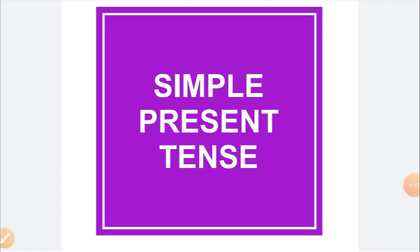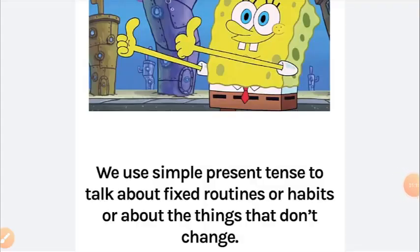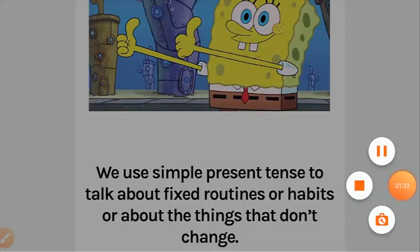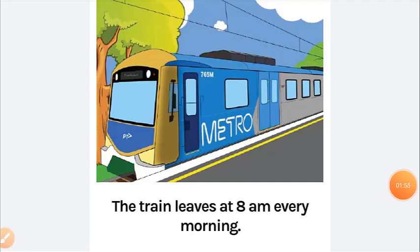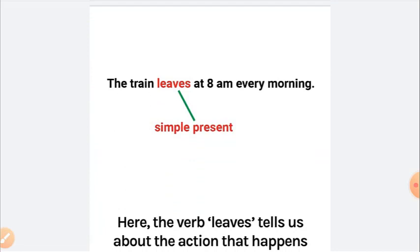The simple present tense is used in many places. The first use is that simple present tense can be used to indicate a repeated action. We use it to talk about fixed routines, habits, or things that don't change. For example: 'The train leaves at 8am every morning.' Here, 'leaves' is in the simple present tense.